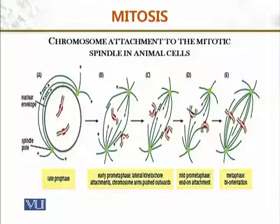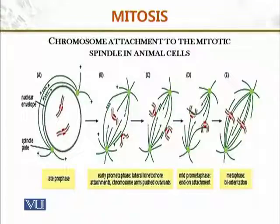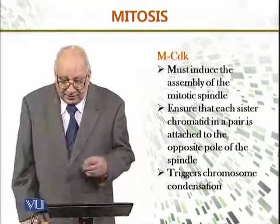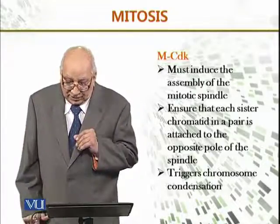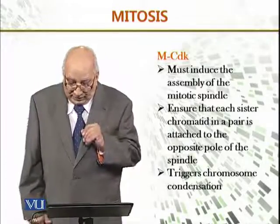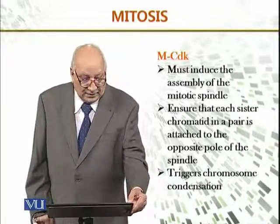Here, chromosome attachment to the mitotic spindle in animal cells has been demonstrated. In late prophase, the spindle appears; in early prometaphase, lateral kinetochore attachment occurs and chromosomes are pushed outward; then in mid-prometaphase, end-on attachment occurs, and finally chromosomes are aligned and the spindle stabilizes. MCDK must induce the assembly of the mitotic spindle, ensure that each sister chromatid in a pair is attached to the opposite pole of the spindle, and trigger chromosome condensation.